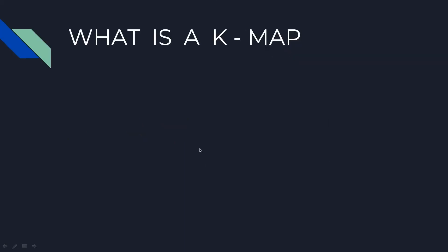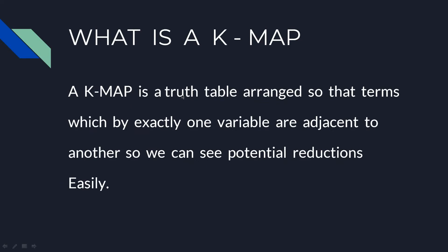First, what is a K-map? A K-map is a truth table arranged so that the terms which differ by exactly one variable are adjacent to another, so we can see potential reductions easily.